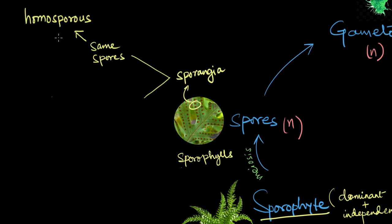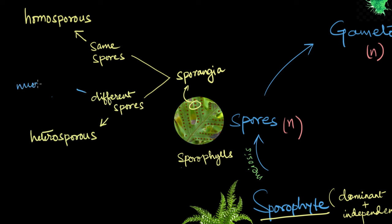Some pteridophytes, however, like Selaginella, have two kinds of sporangia and they produce two different types of spores — microspores, or the male spores, and megaspores, or the female spores. Such plants are said to be heterosporous. On maturity, these spores in both cases are dispersed into the environment by wind, water, or even animals.